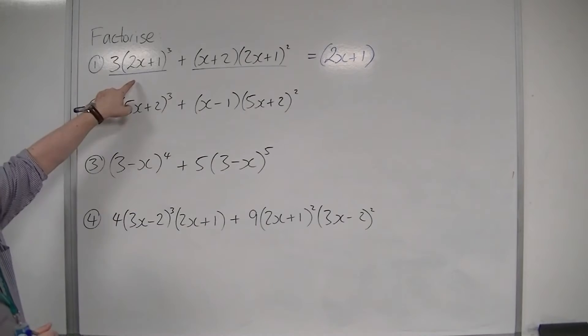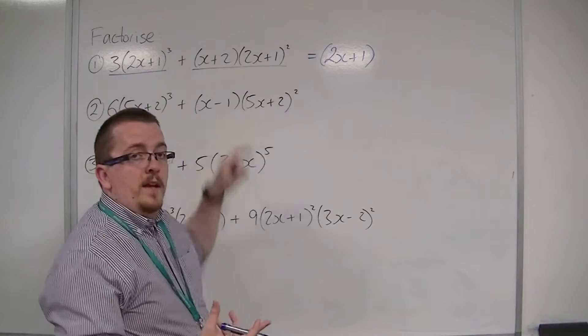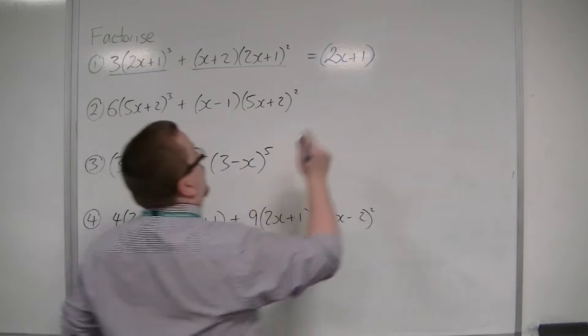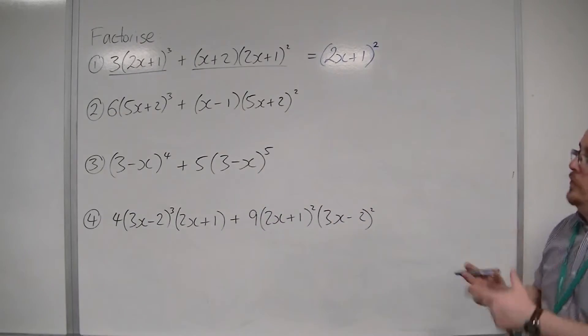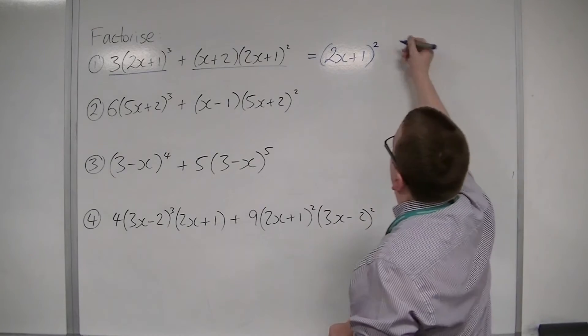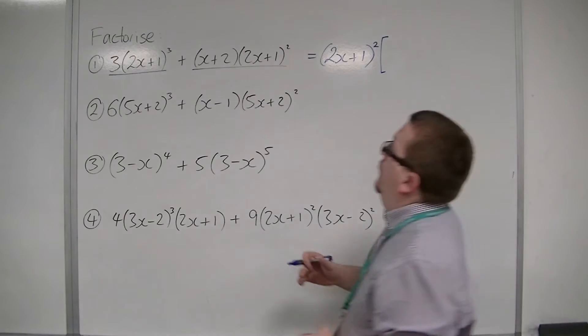So, 2x plus 1 can definitely be pulled out of the front. But, the fact is that that one's got three 2x plus 1's and that one's got two of them. So, they both have at least two. So, 2x plus 1 squared can be brought out of the whole thing.